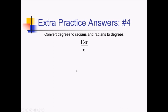On this problem, we're trying to convert this into degrees. I'll multiply by 180 degrees over pi. 180 divided by 6 is going to be 30; 30 times 13 is 390, and the pi's cancel. So this is 390 degrees.